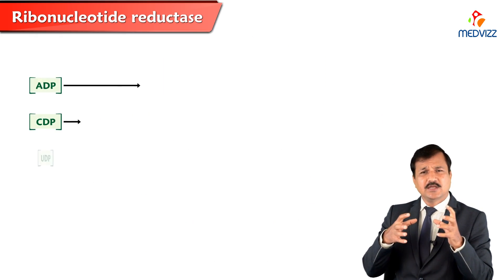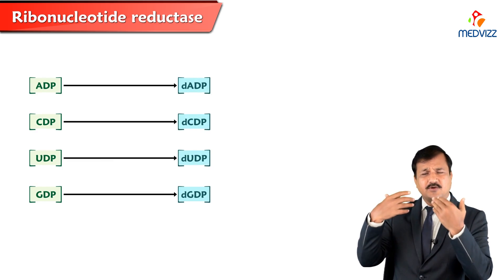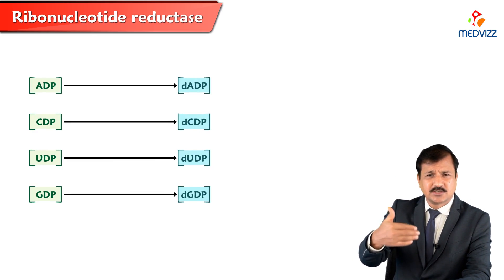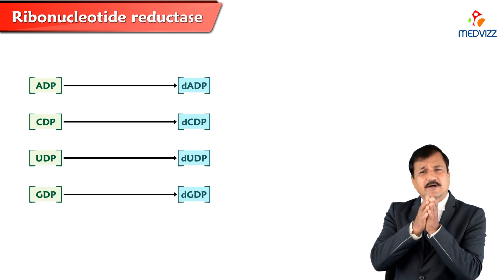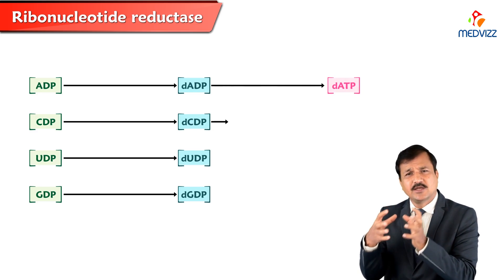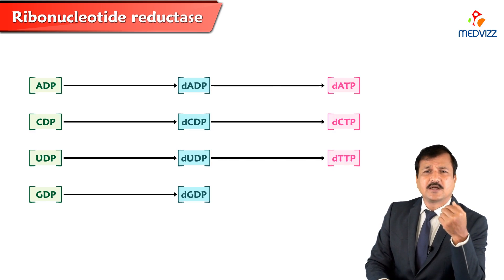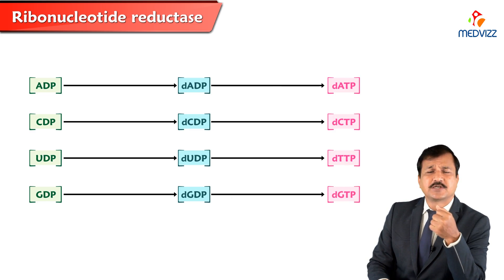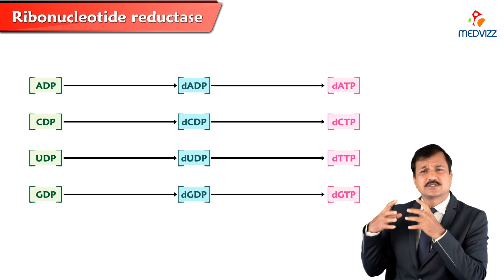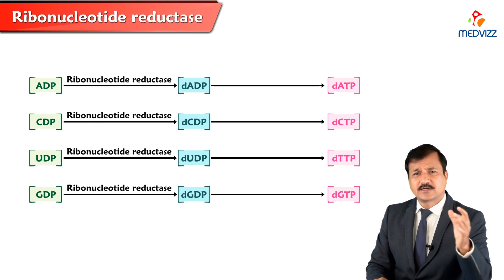Once we get deoxynucleoside diphosphates, these can be converted into deoxynucleoside triphosphates. The products are deoxyadenosine triphosphate (dATP), deoxycytidine triphosphate (dCTP), deoxythymidine triphosphate (dTTP), and deoxyguanosine triphosphate (dGTP). This is how all the necessary substrates for DNA synthesis are made available by the action of ribonucleotide reductase.